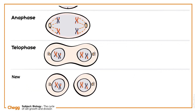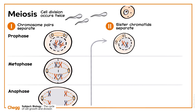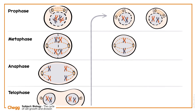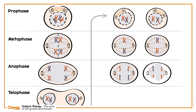Both newly formed daughter cells undergo Meiosis II, a shorter and more straightforward process. Beginning with prophase II, the nuclear membrane breaks down and chromosomes condense. Spindle tubules orchestrate metaphase and anaphase II. The chromosomes are manoeuvred to line up along the centre and split into chromatids, which are then pulled to opposite poles of the cell.